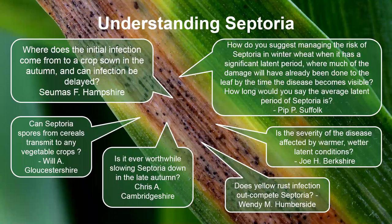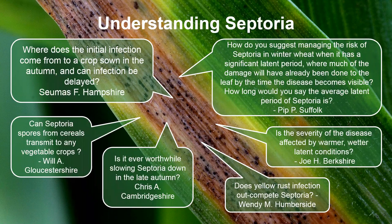We'll go one at a time through the section on understanding septoria, and Andy will address each question and summarize at the end of the section. Question number one comes from Seamus in Hampshire: where does the initial infection come from to a crop zone in the autumn, and can the infection be delayed? Andy answers that initial infection arises basically from ascospores on green bridge plants or seated in stubs.